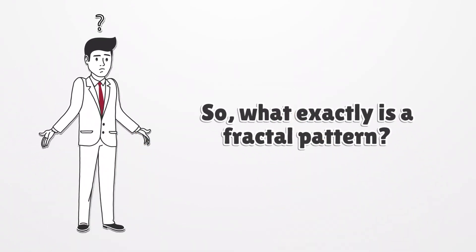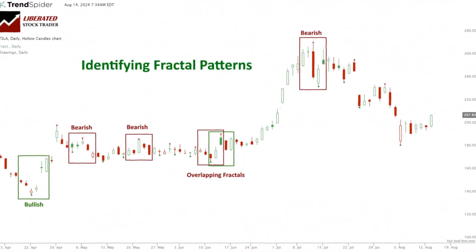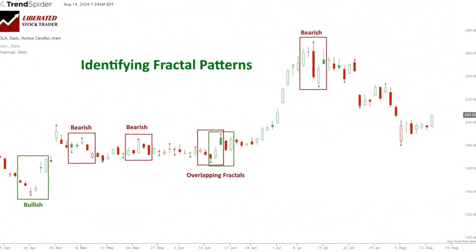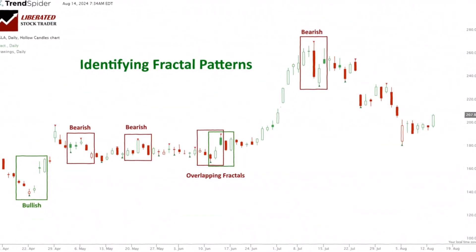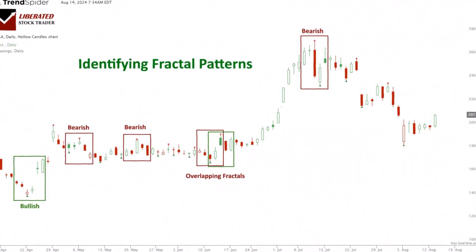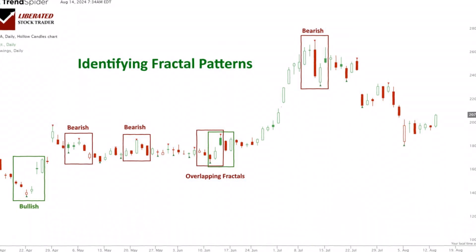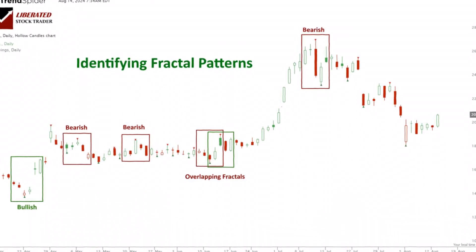So what exactly is a fractal pattern? In trading, a fractal consists of five bars or candles on a price chart. The key bar is in the middle — it's the one with the highest high or the lowest low, flanked by two lower highs or higher lows on each side.